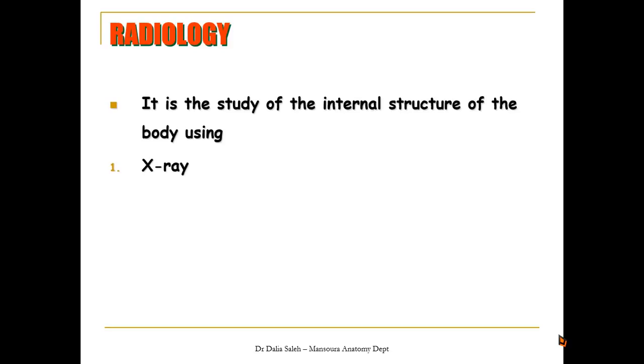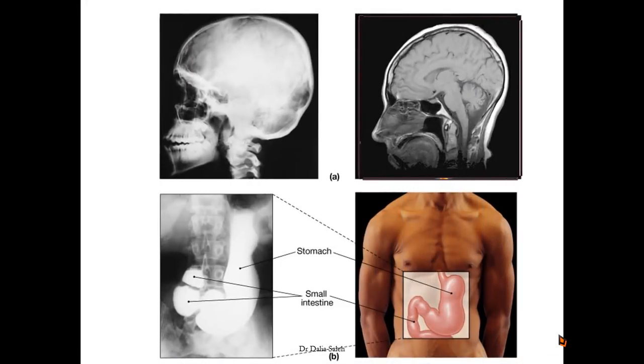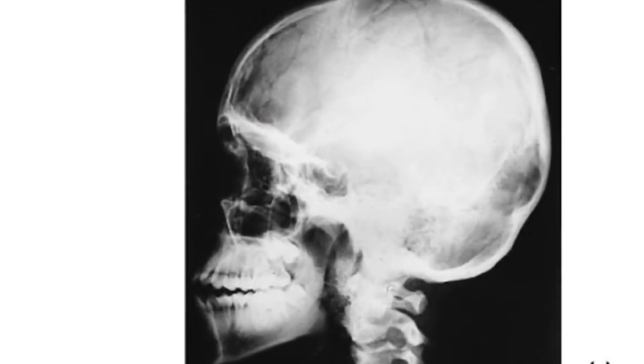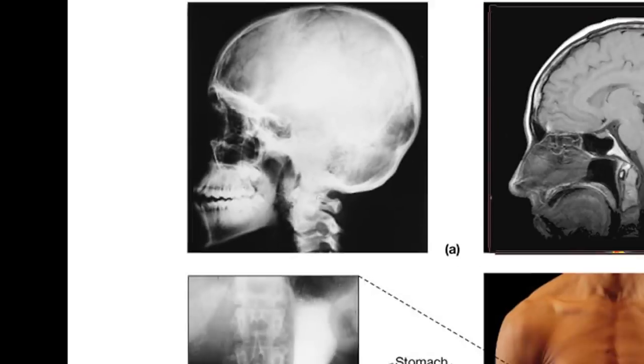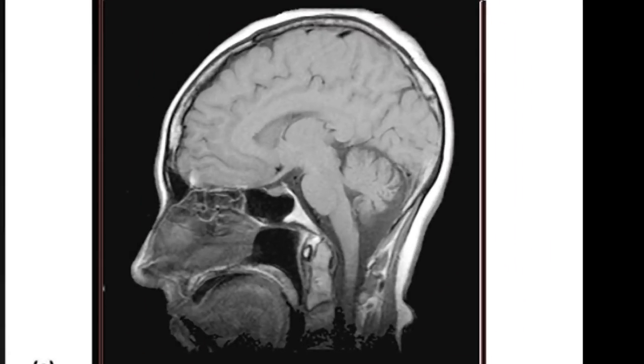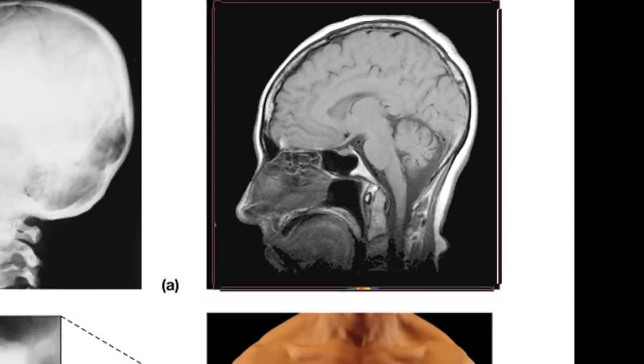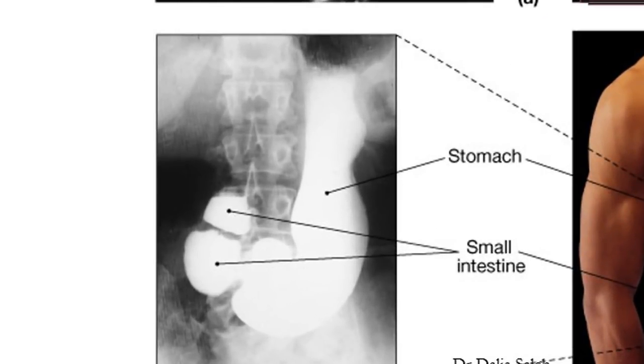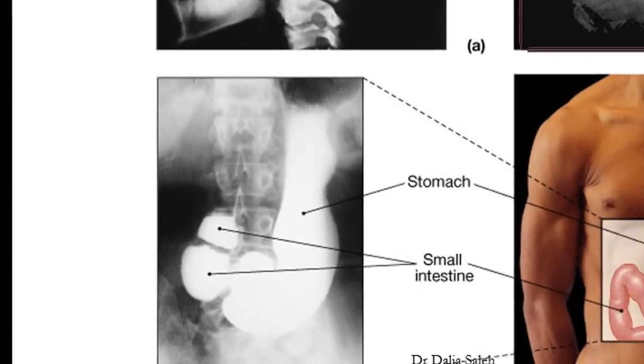And finally, we can use radiology to study the internal structures of the body, using either x-ray, CT, or MRI, or any other different modalities. Here is the x-ray on the skull. It shows only the bones. Here, the MRI, we can see the details of the soft tissue like the brain, the brain stem, and cerebellum. Here, we can use a dye with the x-ray to see the inside of the stomach.